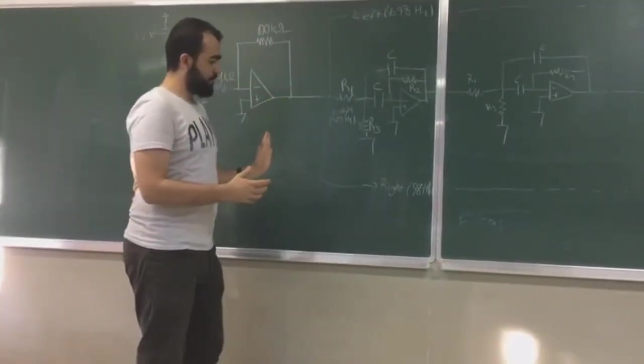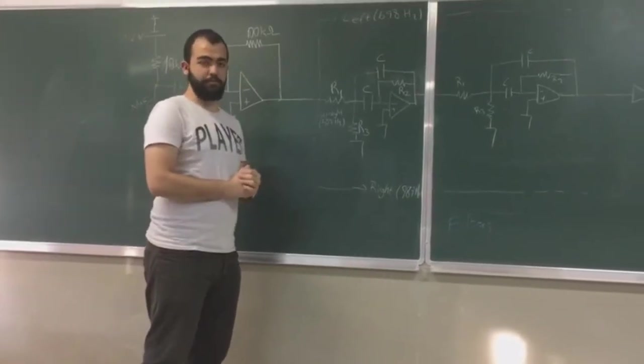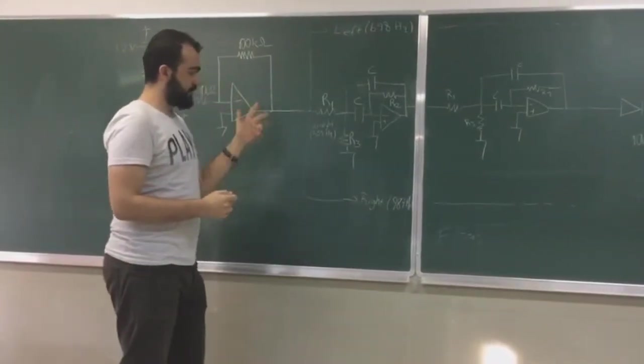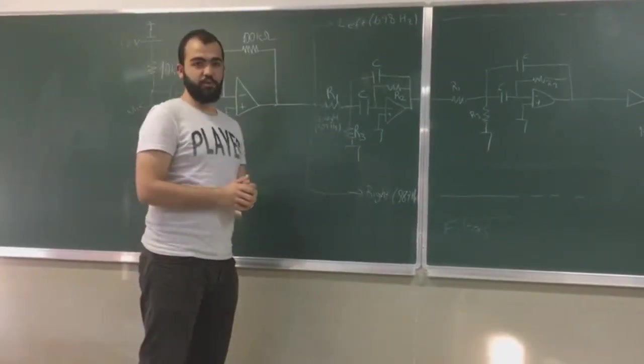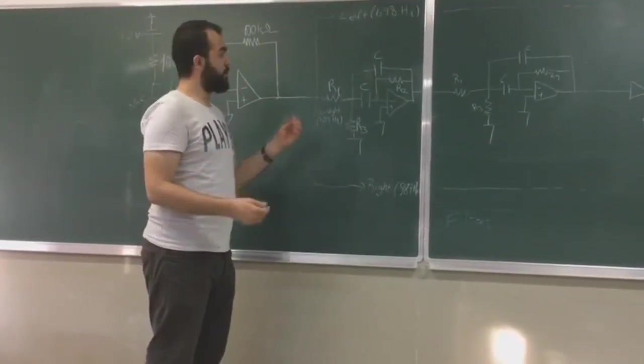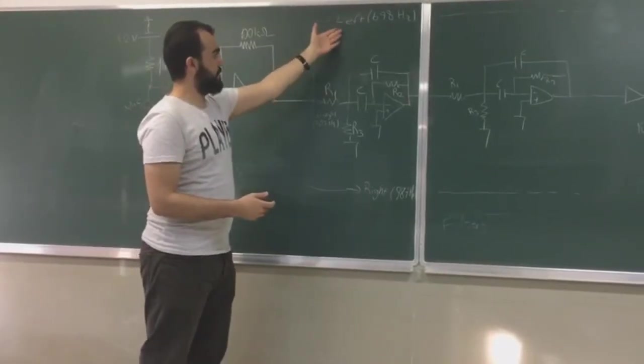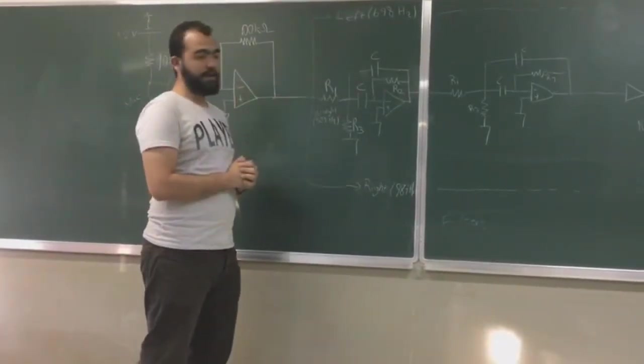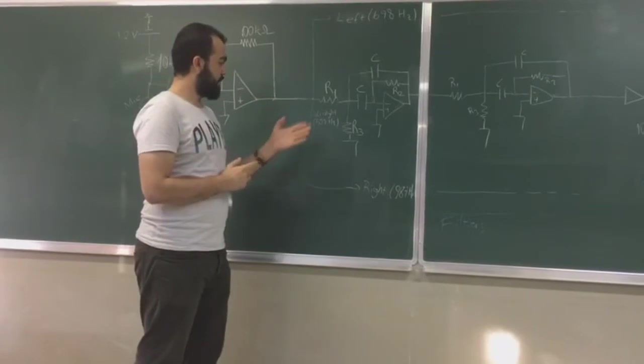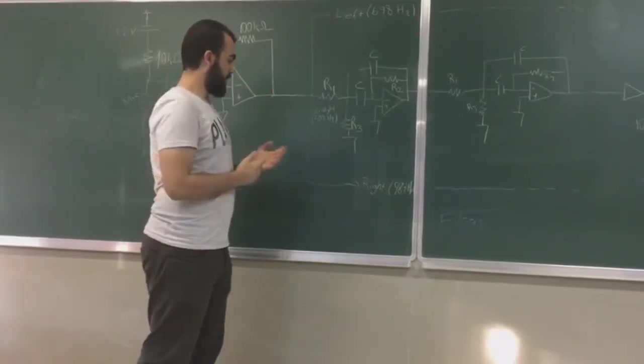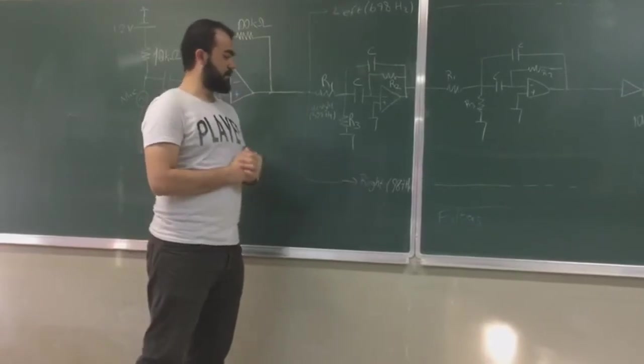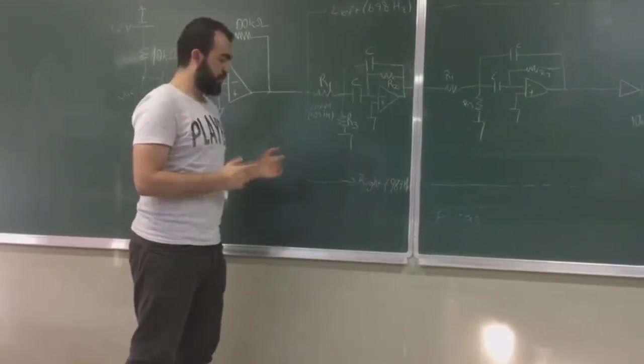Then we reached our filter design circuit. In this part we have 3 filters. As you know we have 3 frequency values for separate modes. We have 698 Hz for left and 523 Hz for straight, and we have 987 Hz for the right.